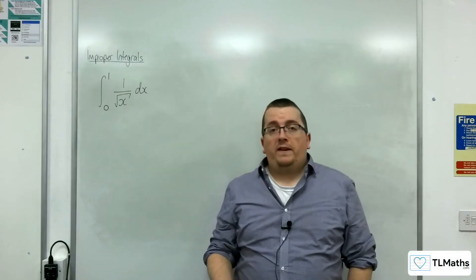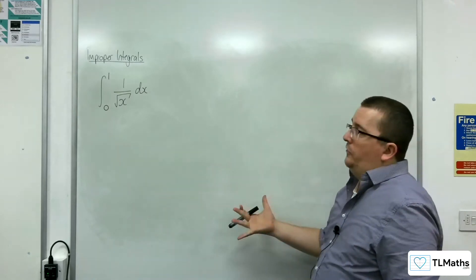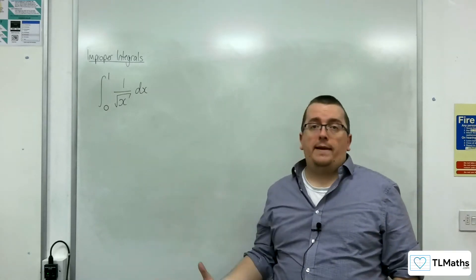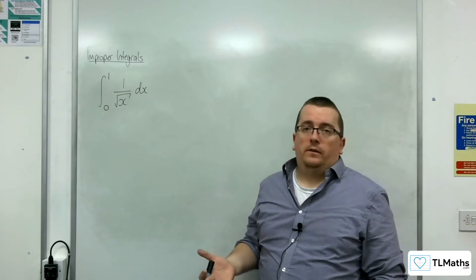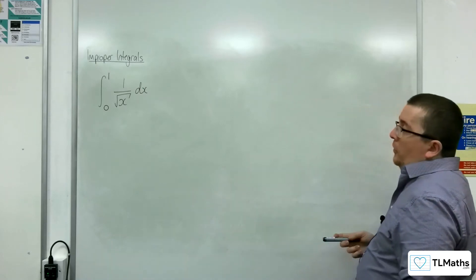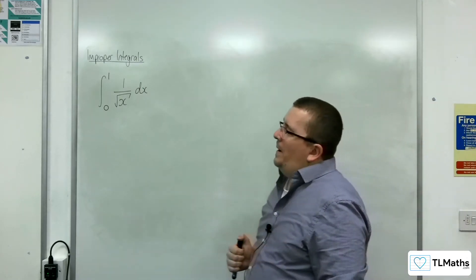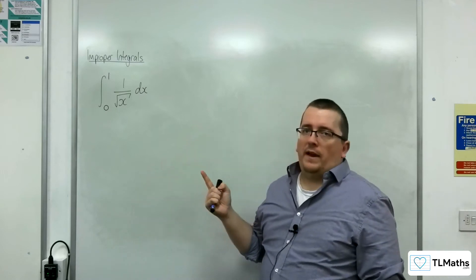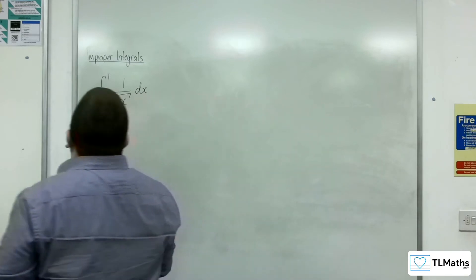In the previous video, we saw that the integral between 0 and 1 of 1 over x squared was undefined — that was divergent. So, how about if we've got 1 over the square root of x? What happens then?